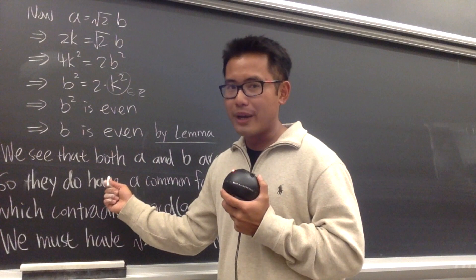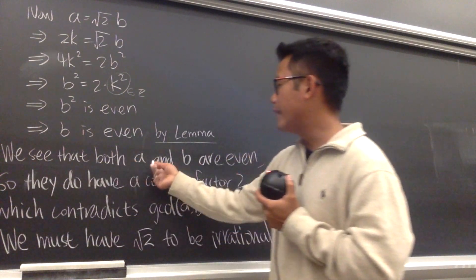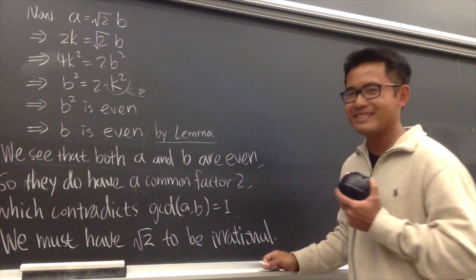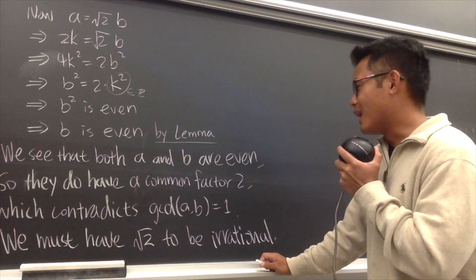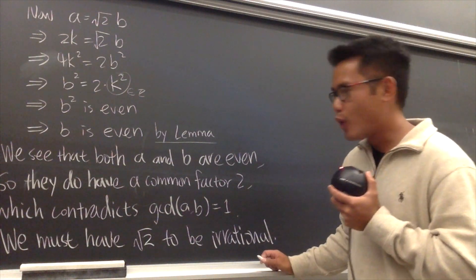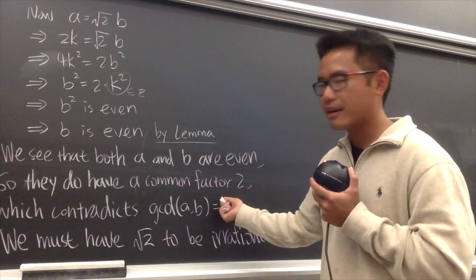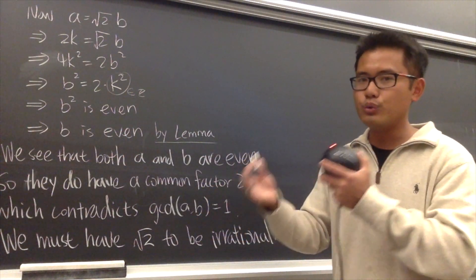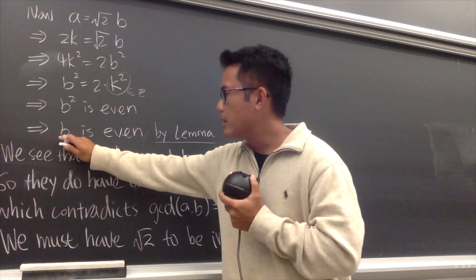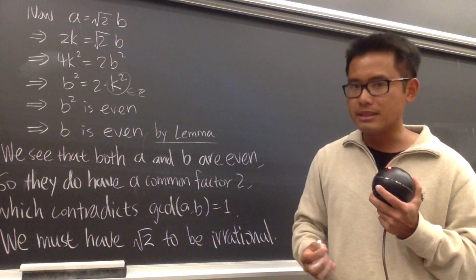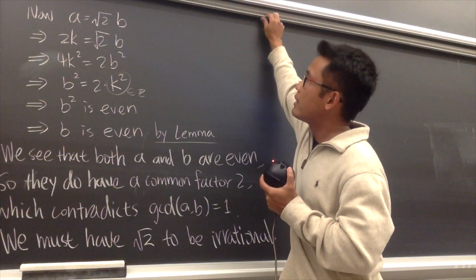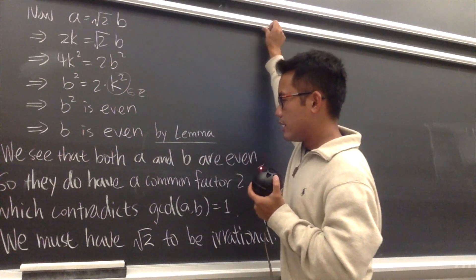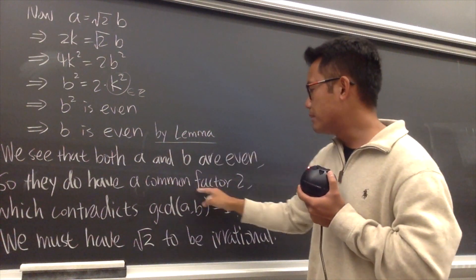So what we get right now is, we see that both a and b are even. Both a and b are even, so they do have a common factor 2. Because whenever you have an even number, it's always going to be 2 times something. b is even, that means b equals 2 times something. And then earlier, we also know that a is 2 times something as well. Therefore, they must have a common factor 2.